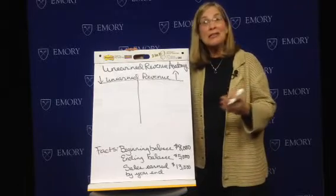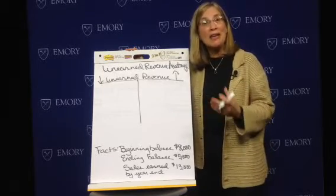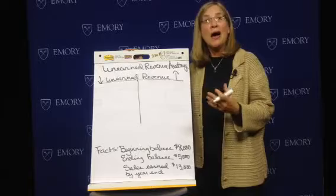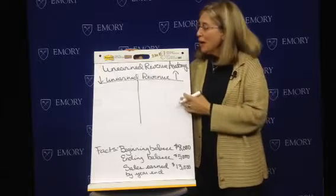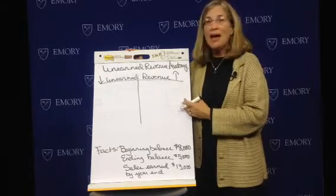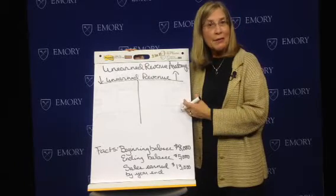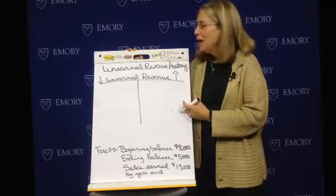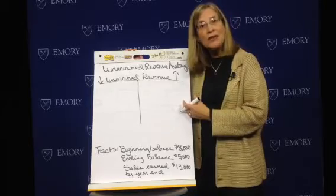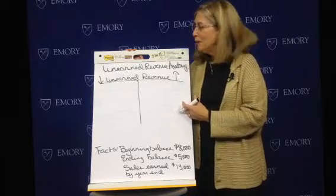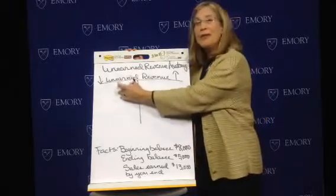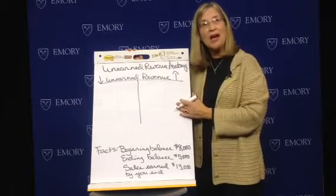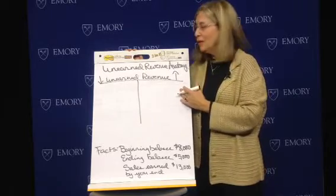We're talking today about the anatomy of different accounts. We're going to look at a current liability account called unearned revenue. And because it's a current liability, we know that the debit side decreases and the credit side increases.